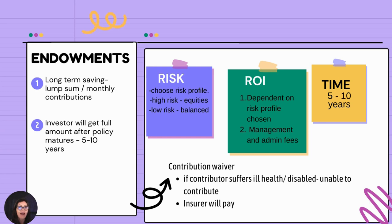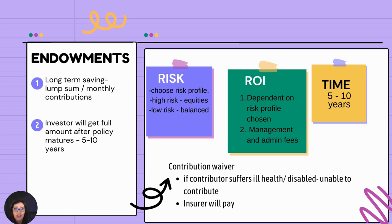Let's look at the last one for now and then the rest will be in part three. Another new word: endowment. It's just a fancy word for a long-term savings plan. What you do is put a lump sum in, or contribute monthly to an endowment. The investor will get the full amount after the policy matures — five to ten years. Many people take out endowments to save for their children's university or a wedding. The money gets put in every month because it's a form of savings. What is the risk? You need to choose the risk profile. High risk means the endowment gets put into equities; a low risk will be a more balanced portfolio. Your investor will look at your risk profile — do you want to take more risk and make as much money as possible? But remember, the risk is also high and you can lose everything.